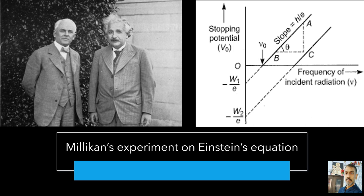The successful explanation of photoelectric effect using the hypothesis of light quanta and the experimental determination of values of Planck's constant and work function, in agreement with values obtained from other experiments, led to the acceptance of Einstein's picture of photoelectric effect. Millikan verified photoelectric equation with great precision for a number of alkali metals over a wide range of radiation frequencies.